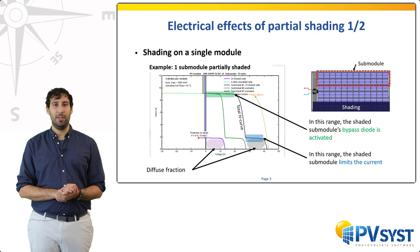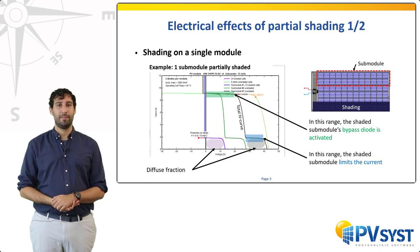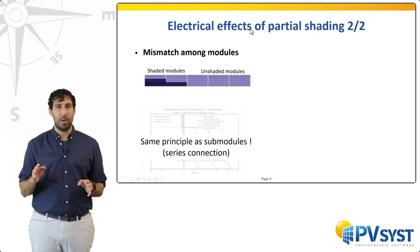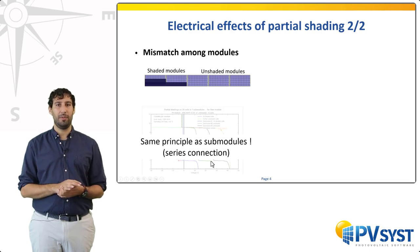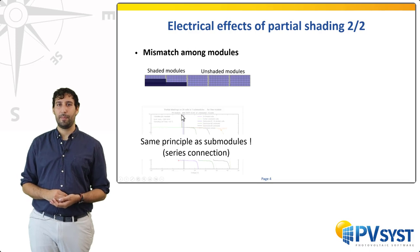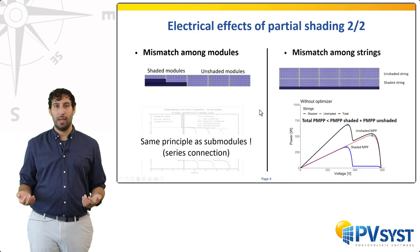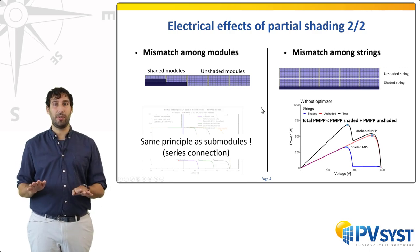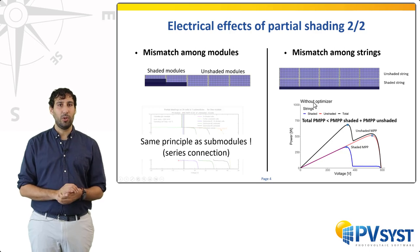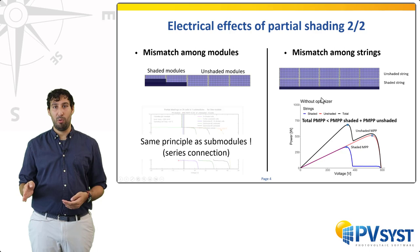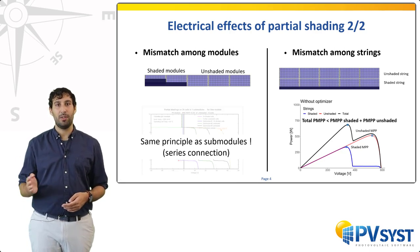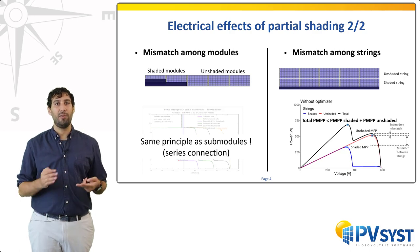Once we connect multiple modules together into strings and inverter circuits, other types of mismatch can arise. If the shadings are inhomogeneous among modules of a same string, there will be a certain mismatch between modules. The behavior is, however, basically the same as with submodules — after all, you still only have components in series. Mismatch between strings is different and can also become important. There may be a certain voltage mismatch between MPPs. In this example, a shaded string is in parallel with an unshaded string. The respective maximum power points are at different voltages due to some bypass diodes being activated. The total maximum power point is situated at the level of the lower voltage, but in doing so, the total maximum is not the sum of the maxima. Here, one will suffer both from the submodule mismatch — i.e., loss of part of the diffuse production — and from the mismatch between the strings.